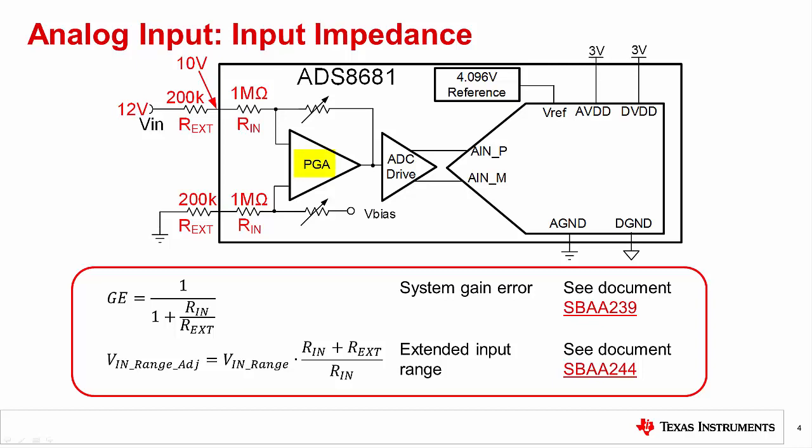In this example, the ADC has an integrated programmable gain amplifier, or PGA, with a 1 megaohm input impedance. Connecting an external resistance will change the gain of the amplifier. If this resistance is unknown or a dynamic impedance, it will introduce a system gain error according to the equation given. In many cases, this error can be eliminated with a simple two-point calibration.